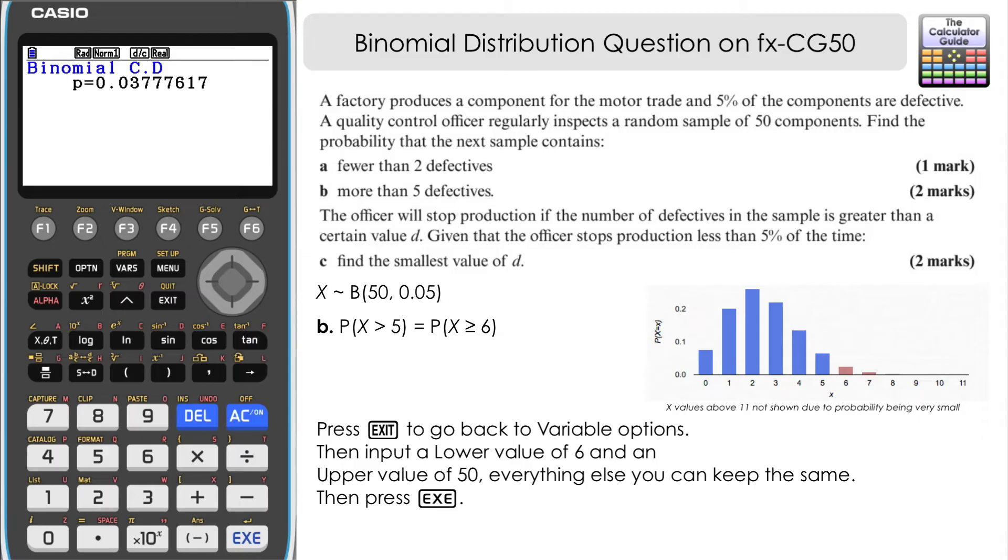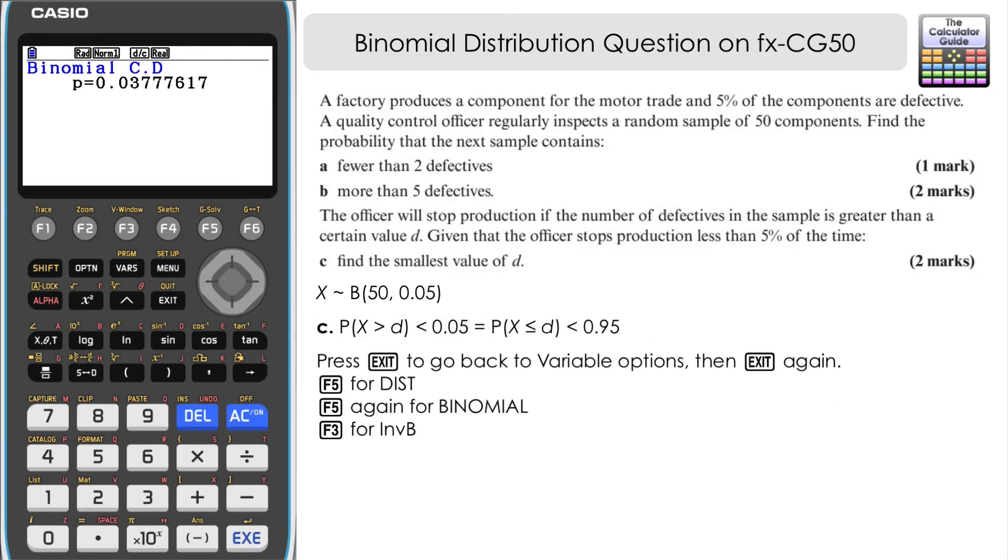Now what we're going to use to answer this question is we're going to use the inverse binomial feature on the CG50. I'm going to show you this way of doing it and then a second way of being able to do it, which is also valid for perhaps other calculators such as the ClassWiz. But we have this extra feature on the CG50 that enables us to find inverse binomial.